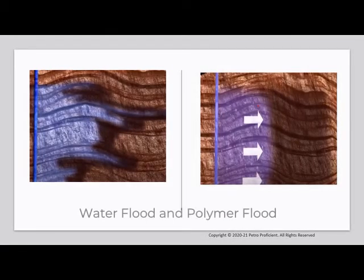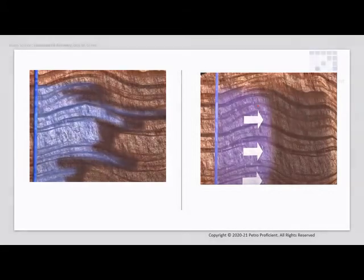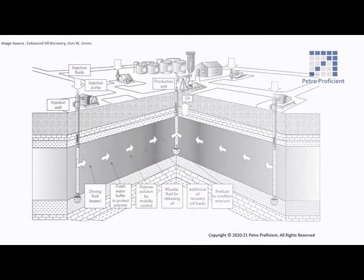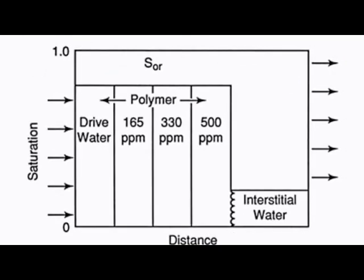Water that is used for water flooding can be modified to improve the sweep of the oil in the displacement process. This can be done by adding polymers, which improves the water flood sweep and displaces more oil than conventional water flooding. A general approach is to inject polymer continuously at the initial polymer concentration for a limited period, reducing the polymer concentration systematically as more pore volumes are injected, as shown in the figure. After sufficient polymer has been injected, the polymer slug is displaced through the reservoir by injecting water.